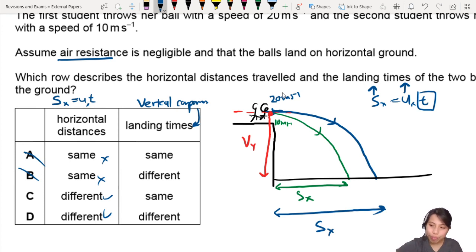So that is the thing you need to remember, landing times are the same. Because the vertical component is the same, you start at the same vertical height. So best choice will be c for this question.